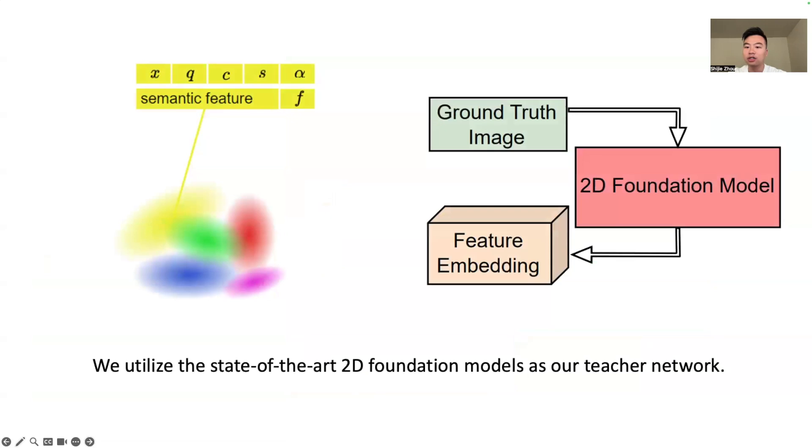In addition to the original five Gaussian attributes—the location X, quaternion Q, the color C, which is spherical harmonics for view-dependent color representation, the scaling S, and the opacity alpha—we introduce a semantic feature F for each Gaussian in 3D space.